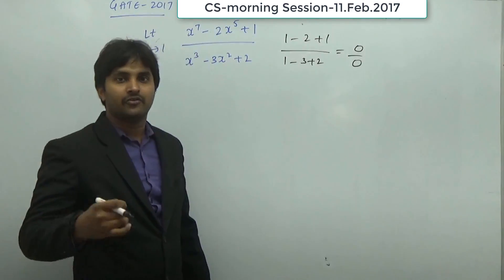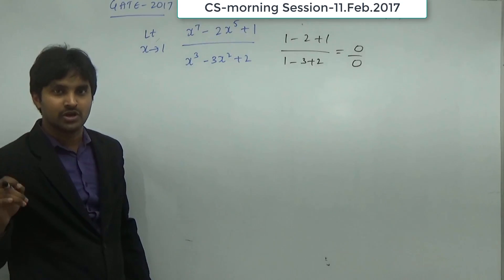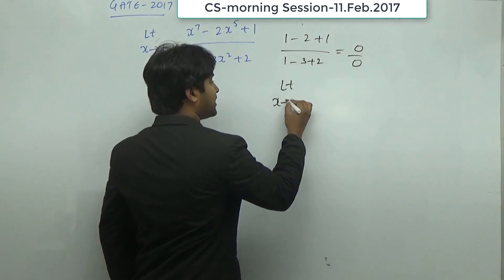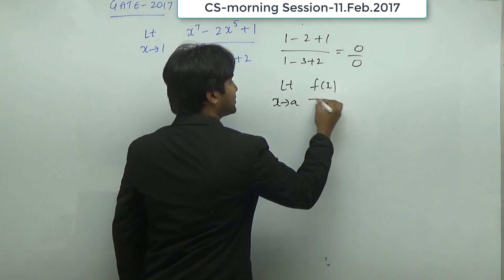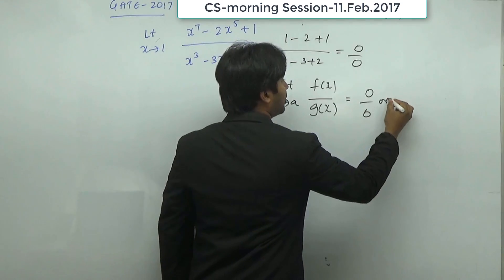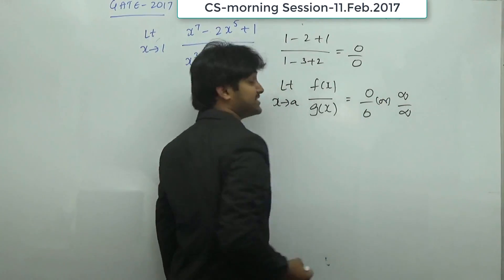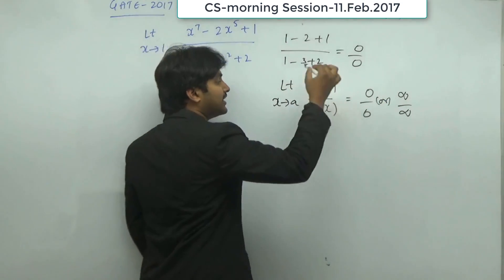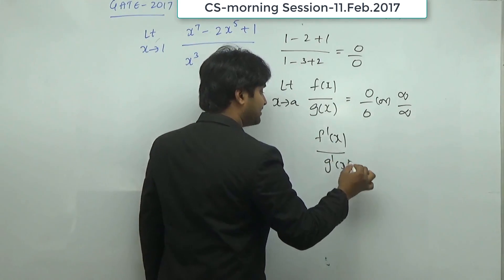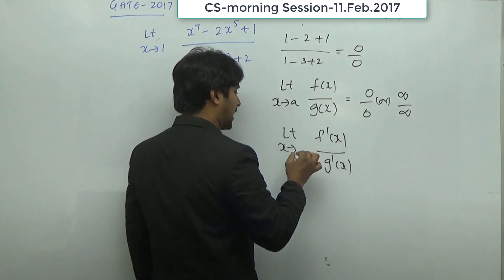Now what is L'Hospital's rule? If you're having something like limit x tends to a, f(x) by g(x), and if you are getting something like 0/0 or infinity by infinity, in such a case you're going to derivate the numerator and denominator and then you're going to put the value of x tends to a.